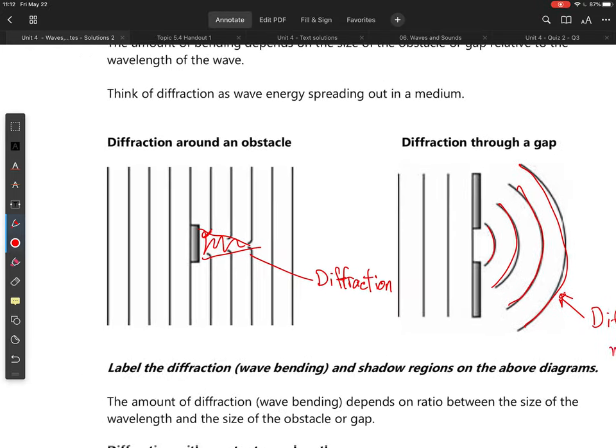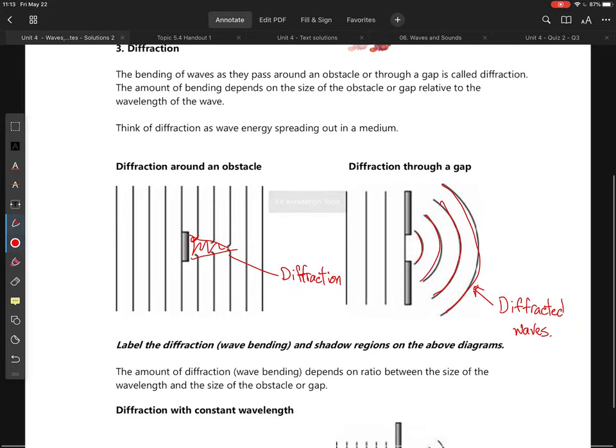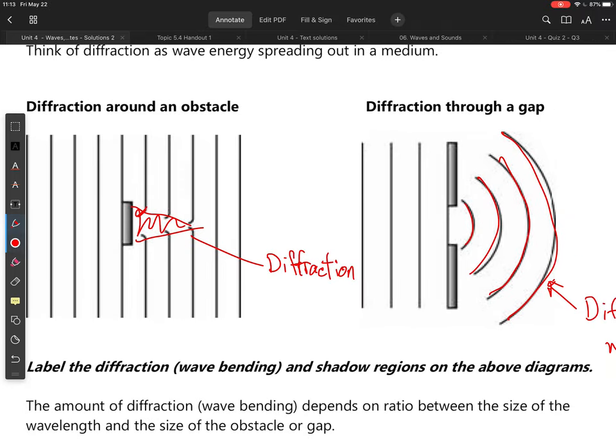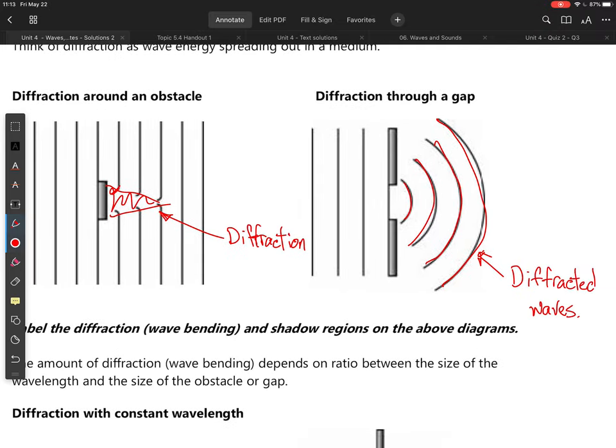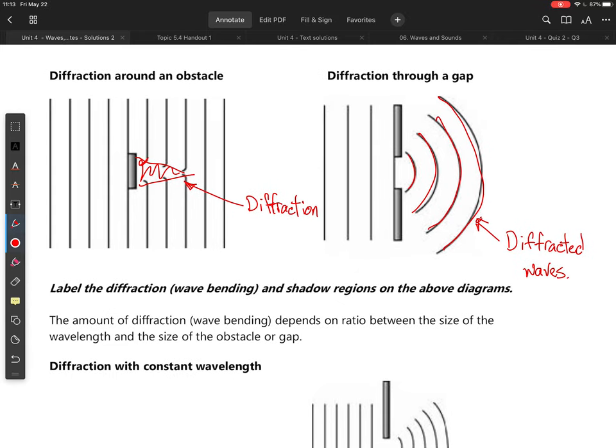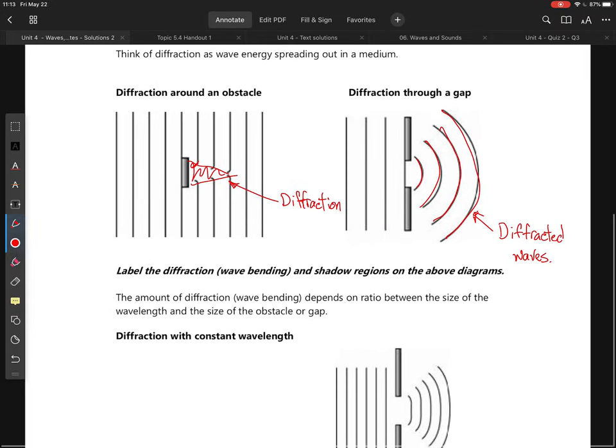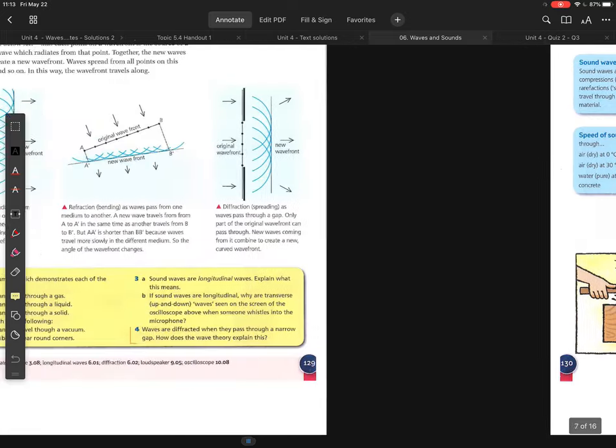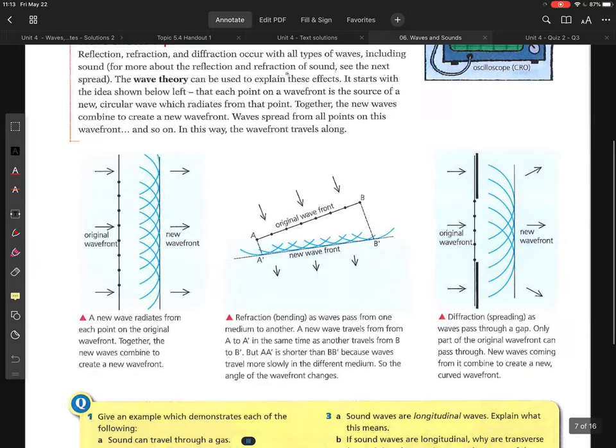Next, we're going to quickly chat about diffraction. And I have shown the areas of diffraction here with some scribbling, which is of course the best way to communicate. So we have diffraction around an obstacle and diffraction through a gap.